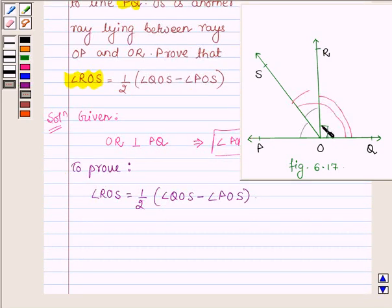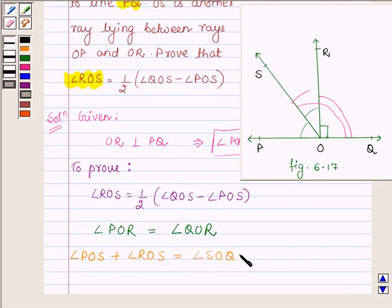Since OR is perpendicular to line PQ, therefore we have angle POR equal to angle QOR. Now POR can be written as the sum of angles POS and ROS, and QOR can be written as angle SOQ minus angle ROS.